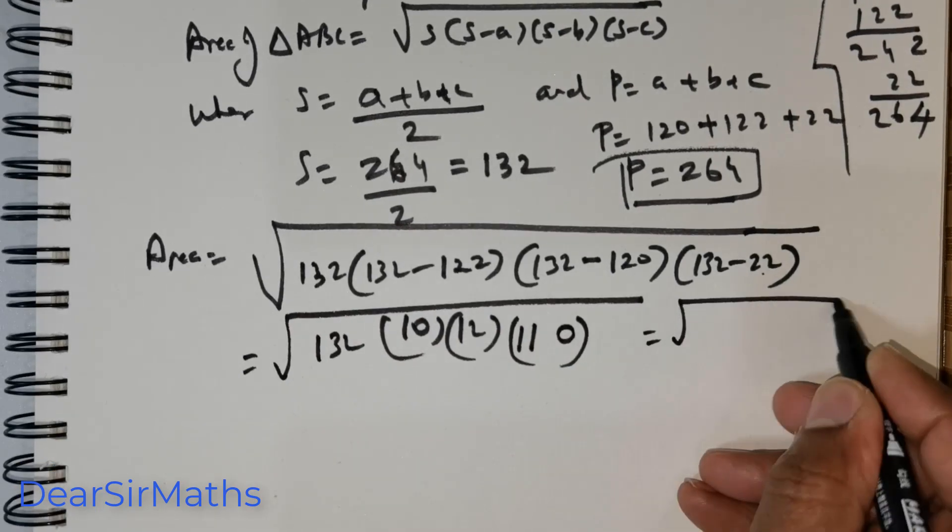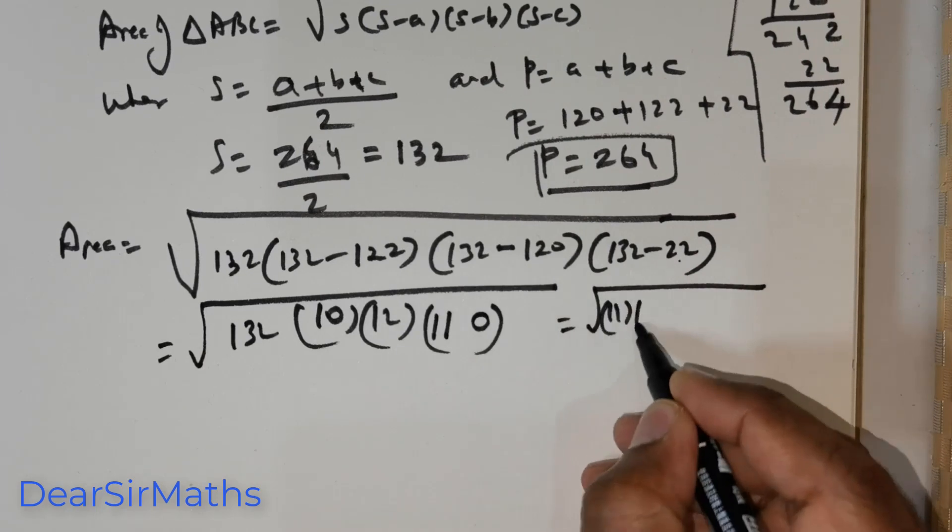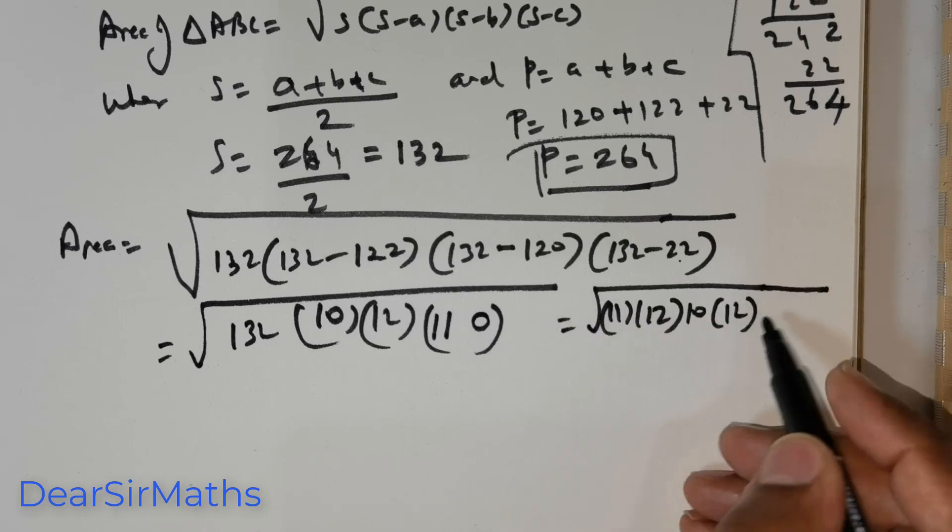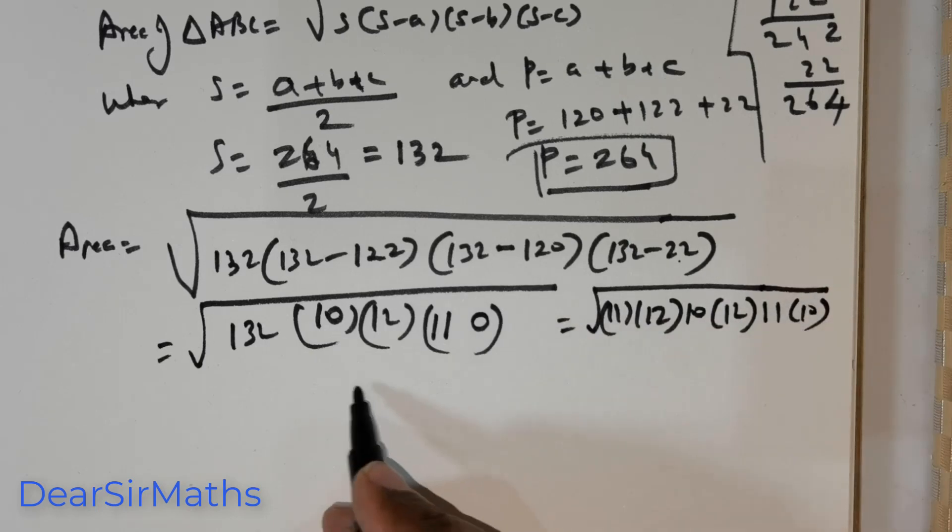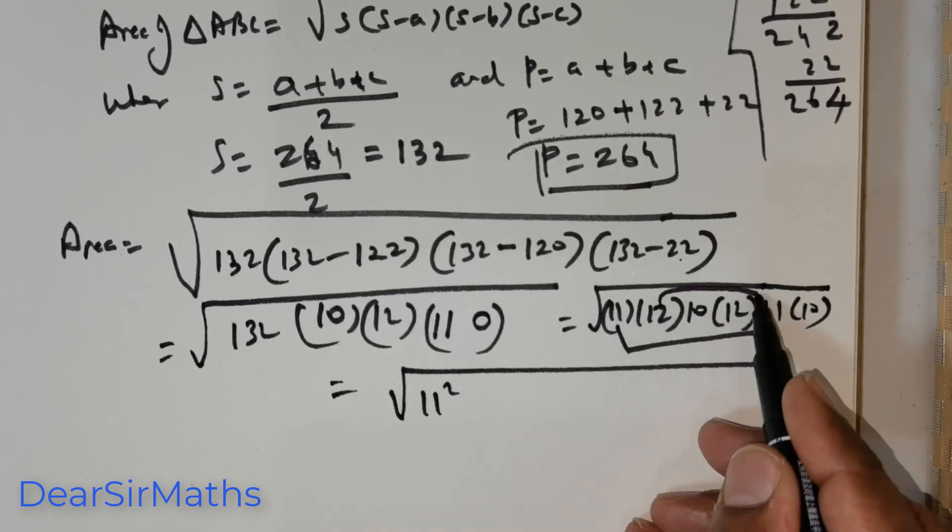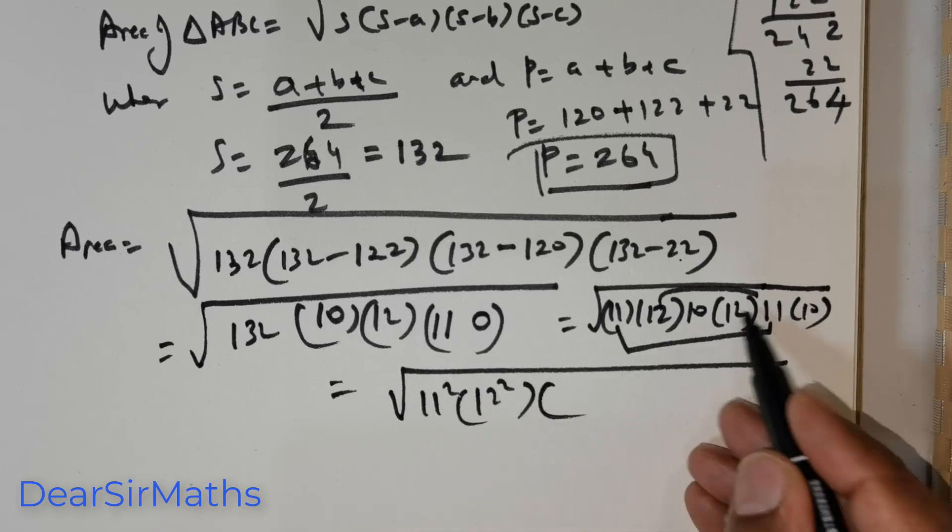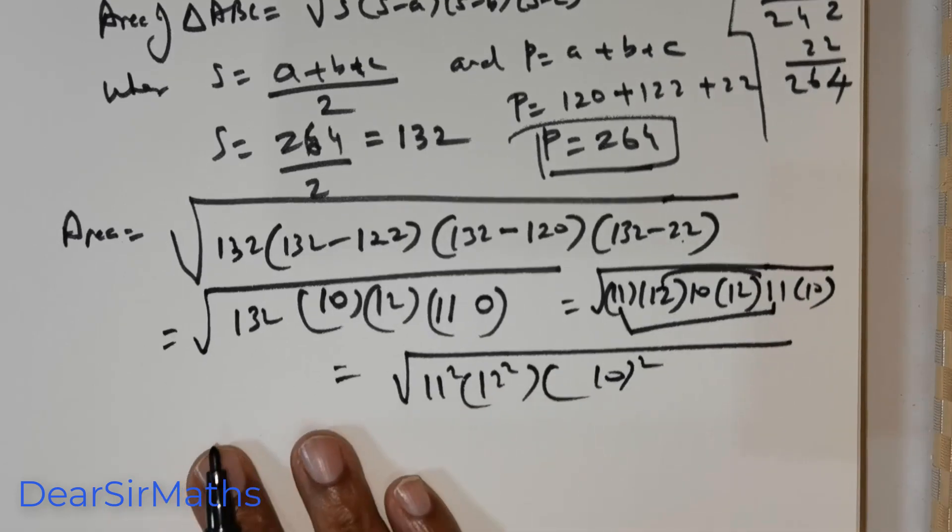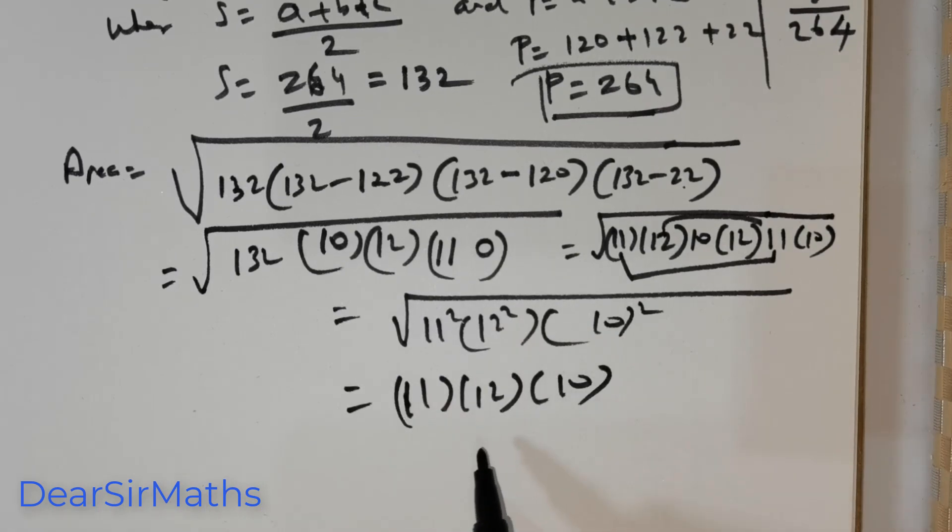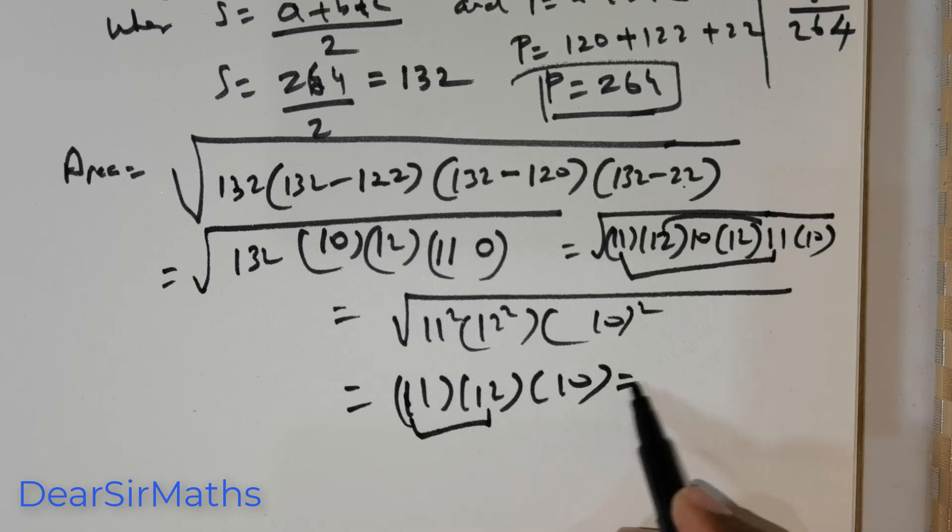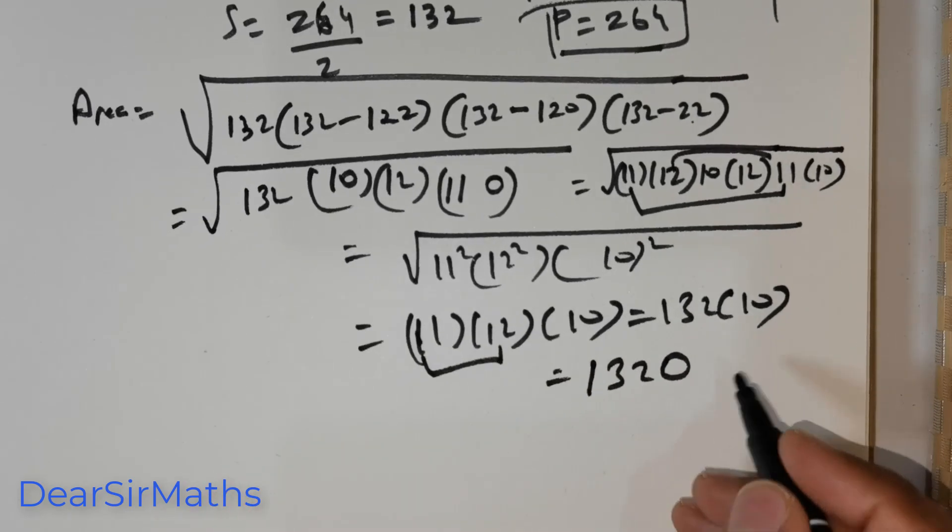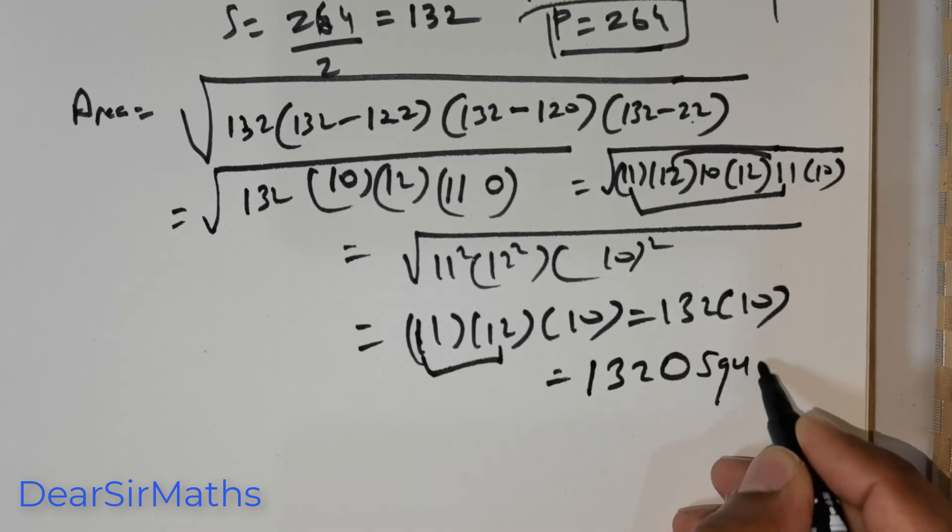Now, this can be further re-written as, 132 is nothing but 11 times 12. So, this is equal to root of 11 squared, 12 squared and then 10 squared. So, if you were to take the root, you get 11 times 12 times 10. So, 11 into 12 is 132 times 10. That's going to give you 1320. This is the area, square units.